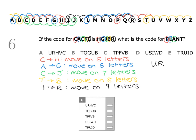Then we have the letter A, and we're moving on seven letters. A is here — moving on seven letters gives us the letter H. Then we have the letter N, and this time we're moving on eight letters. N is here — moving on eight letters gives us the letter V. Finally we have T, and we're moving on nine letters — giving us the letter C.